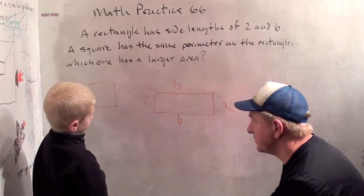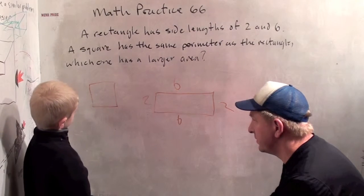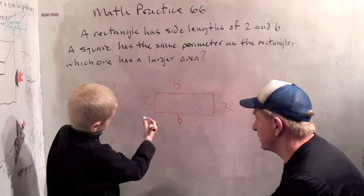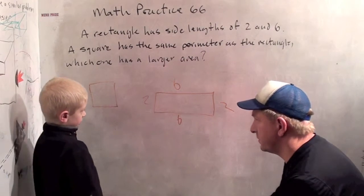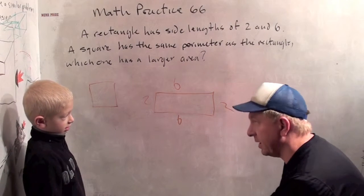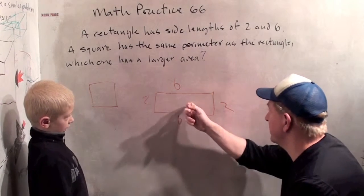Well, the perimeter of the rectangle is just 2 plus 6 plus 2 plus 6. And 2 plus 6 is 8, so 8 plus 8 is 16. Okay, so the perimeter of the rectangle is 16.